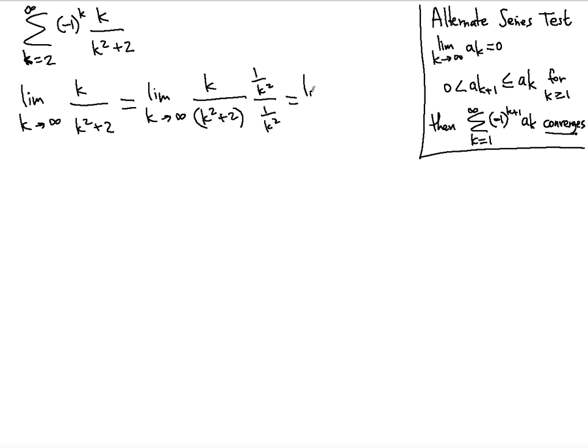So then what do we see? We have the limit. So what we have here is 1 over k as a result over 1 plus 2 over k squared. If you distribute the 1 over k squared to both of these terms, so now you can evaluate this.